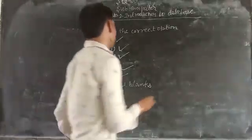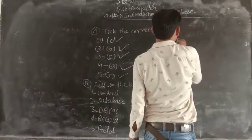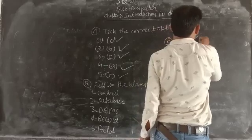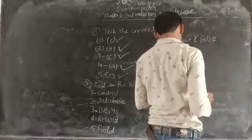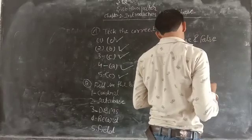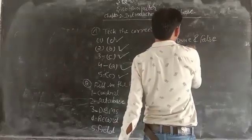Now question number C, true and false. Number first, a database is an organized collection of data. True.